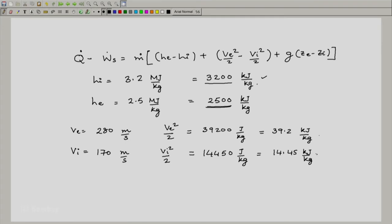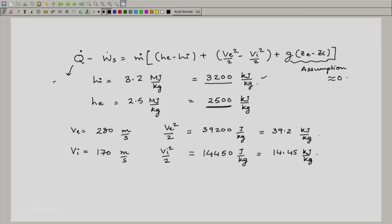What has been mentioned about z_e and z_i? Nothing. So we can make an assumption that it is nearly equal to zero. What about Q_dot? Now it seems like the turbine is not adiabatic, and Q_dot is of the order of 50 kilojoules per kg.